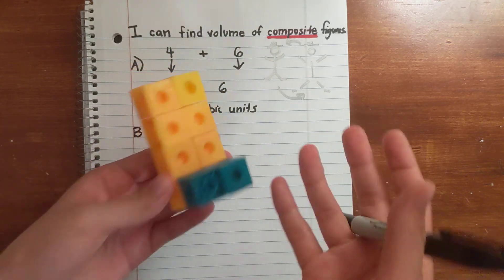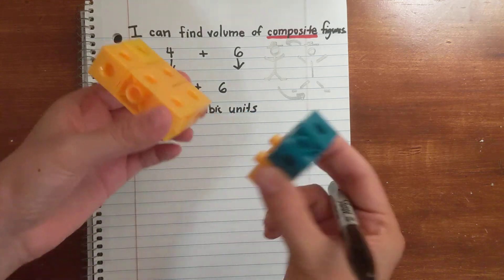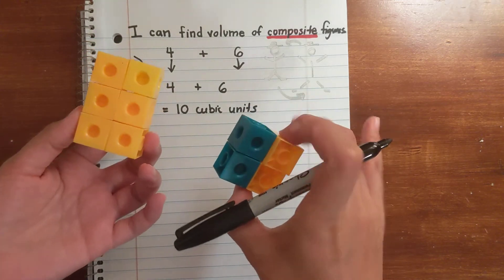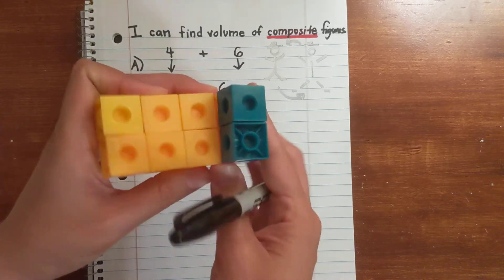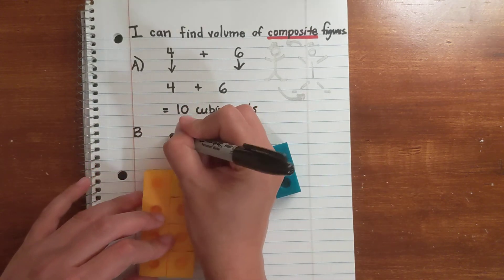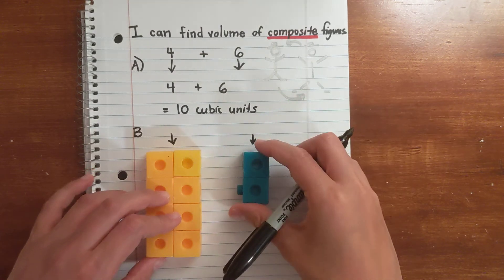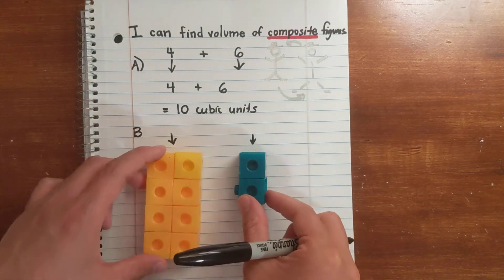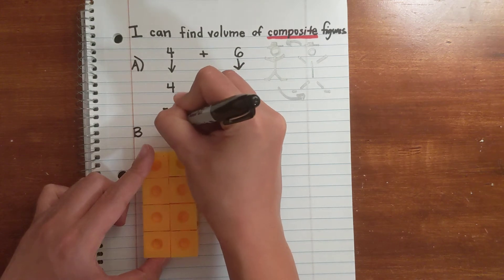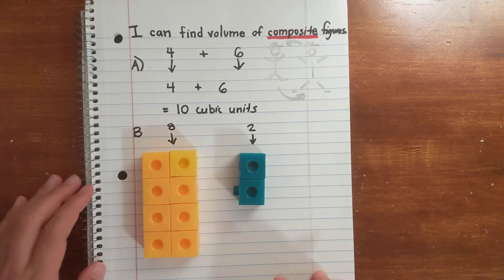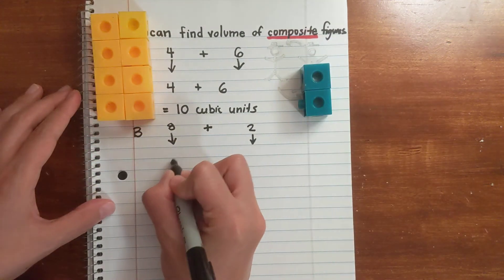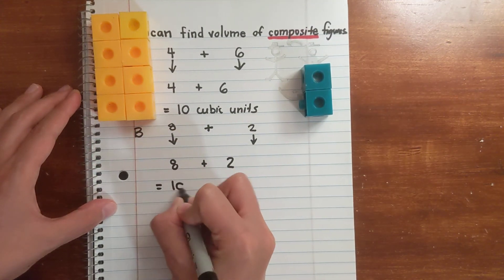Let's do one more. Step one: this is a composite figure, let's break it apart. It's color-coordinated, though some might visualize it differently — both approaches are fine. Step two: find the volume of the two regular figures. Looking at the depth, the yellow one on the left is eight, and the one on the right is two. Step three: add them together — volume is additive. Eight plus two equals ten cubic units.